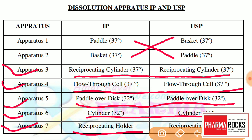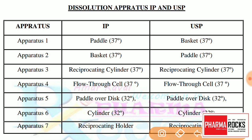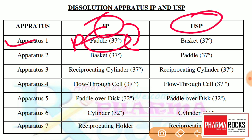So the only difference is about the paddle and the basket for apparatus 1 and apparatus 2. Here is a trick you can use. First, take IP — Indian Pharmacopeia. The second term in IP is P. So apparatus 1 as per the IP starts with P, meaning paddle. In the USP, the first one is the basket and the second one is the paddle.